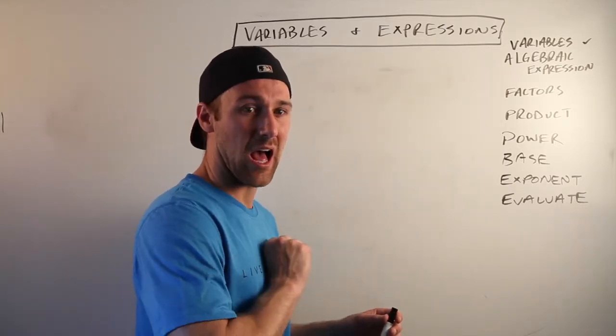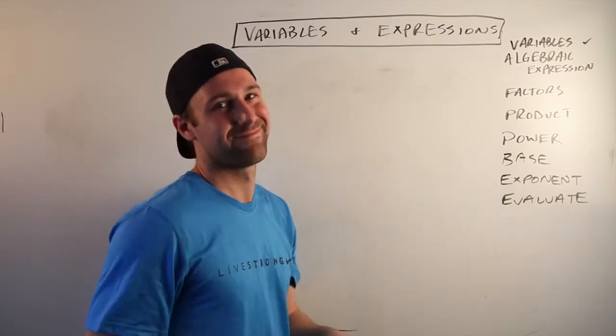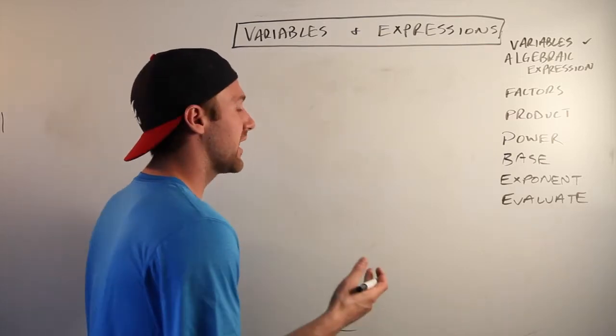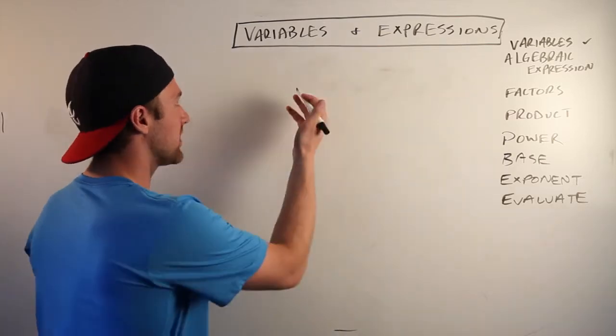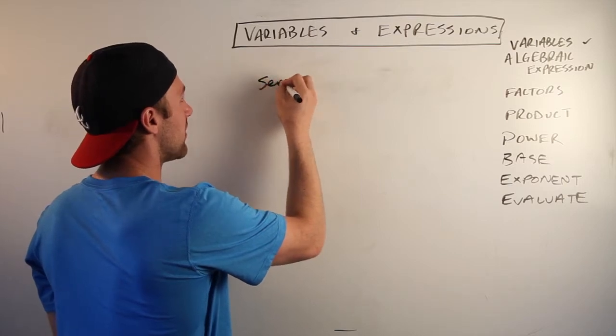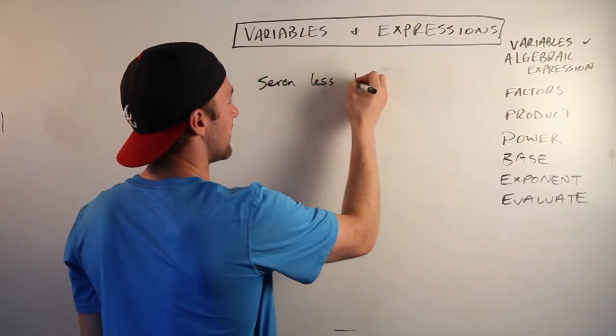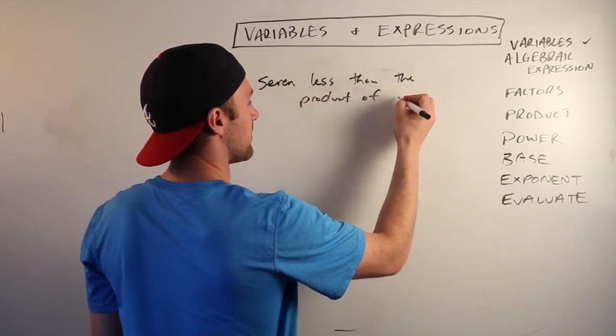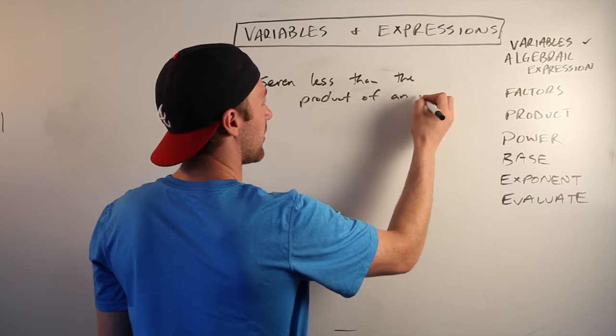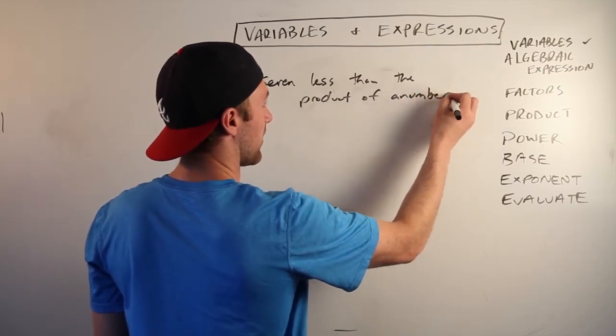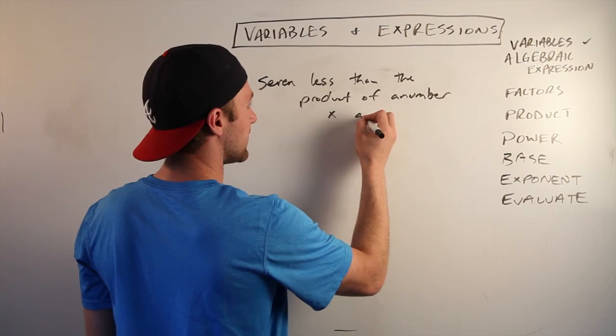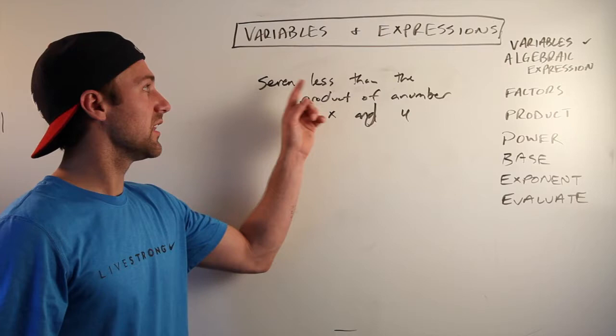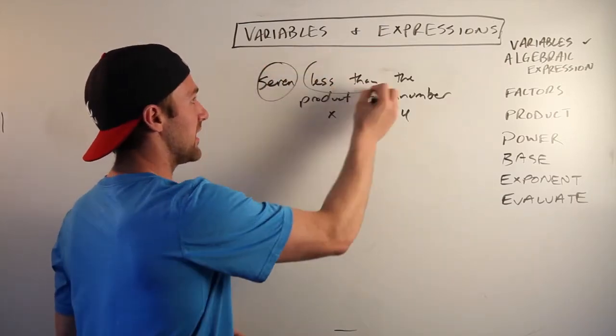Okay, so here we go, we're doing algebraic expressions. Let's say the words they give us are: seven less than the product of a number X and four. Okay, seven less than - seven's key, less than is the key, product is, and then X and four.